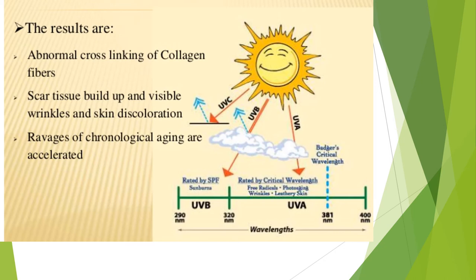Cross-linking of collagen fibers leads to scar tissue buildup and visible wrinkles. As shown in the figure, cross-linkage between collagen fibers occurs when UV radiation directly attacks our skin, causing discoloration and wrinkles through the formation of free radicals and enhancement of enzymes such as collagenase, which accelerates chronological aging.